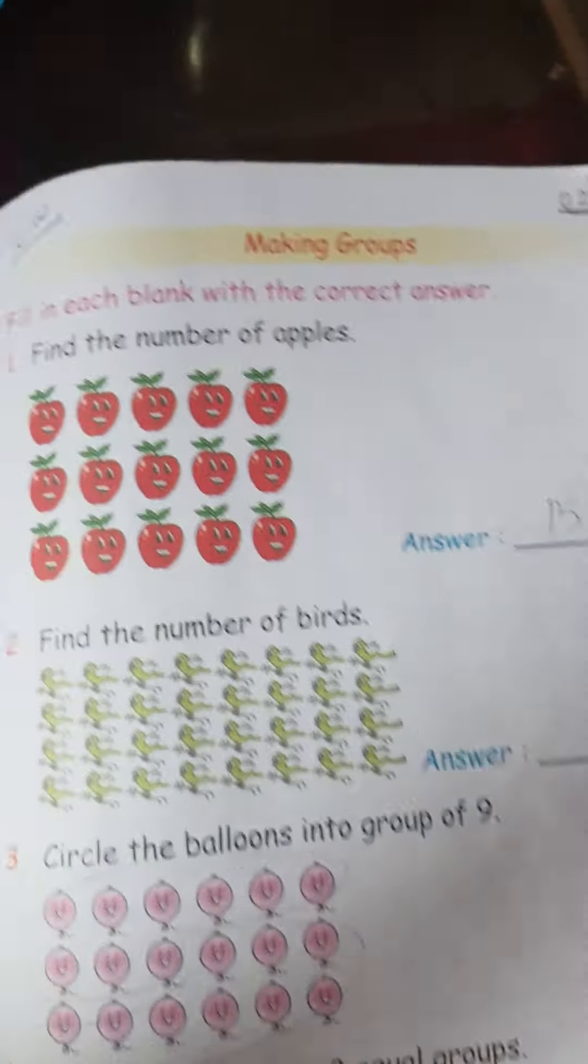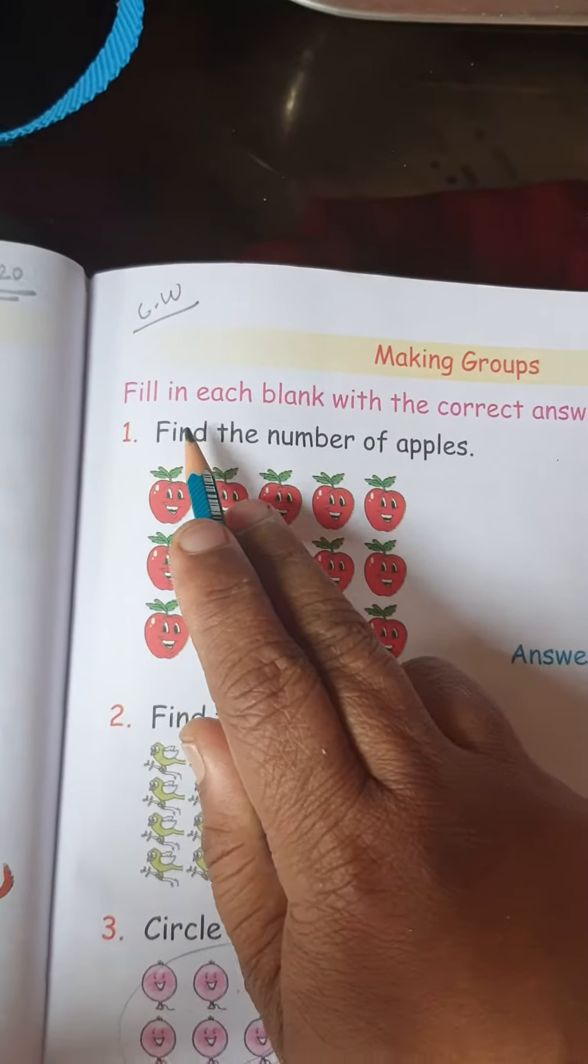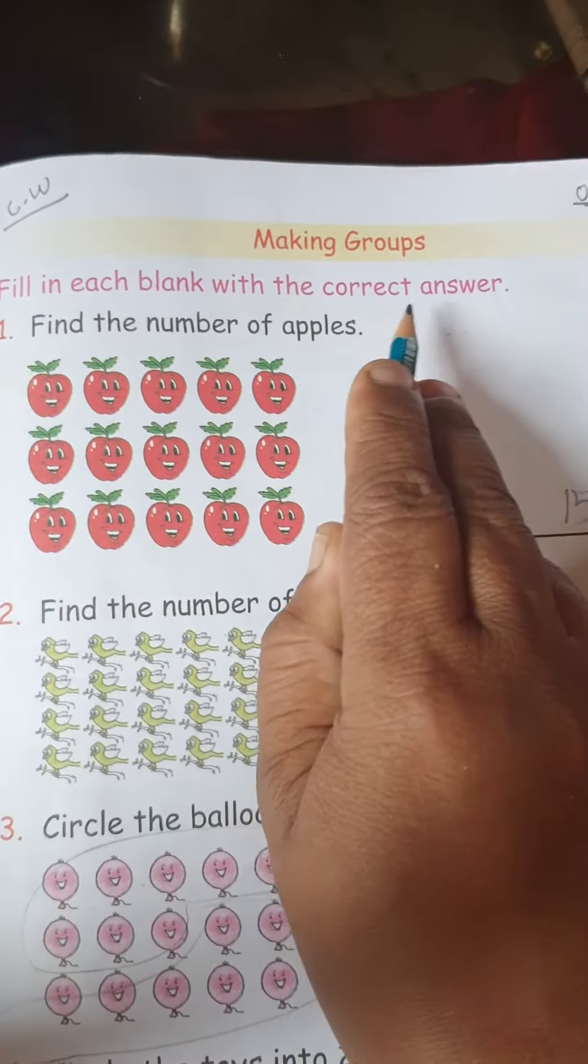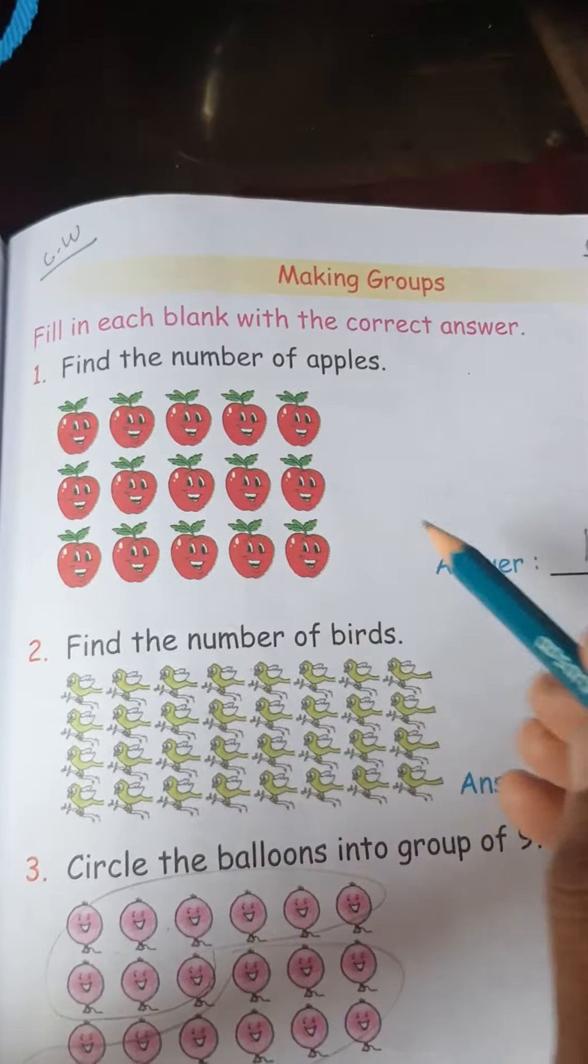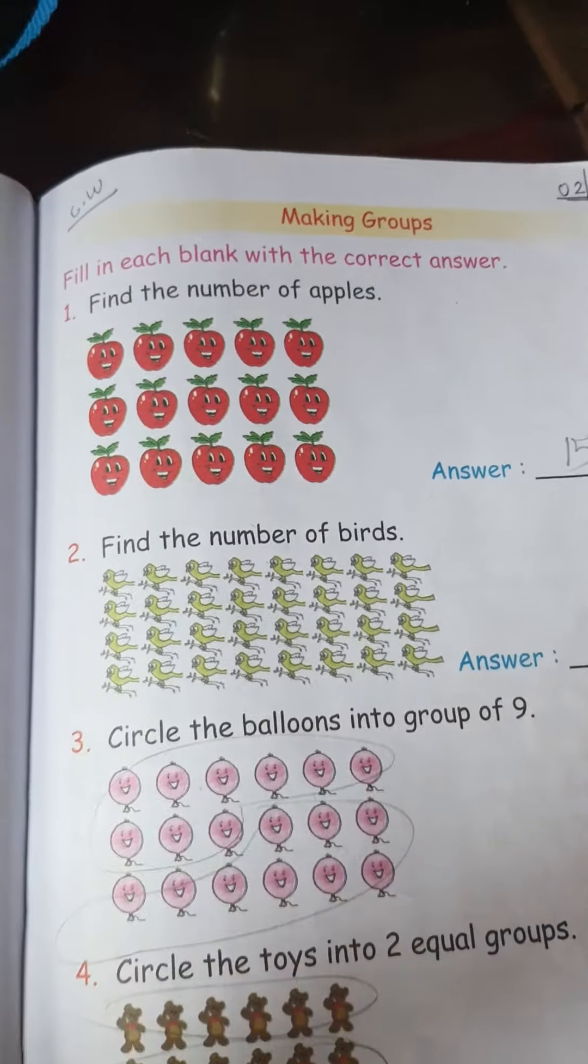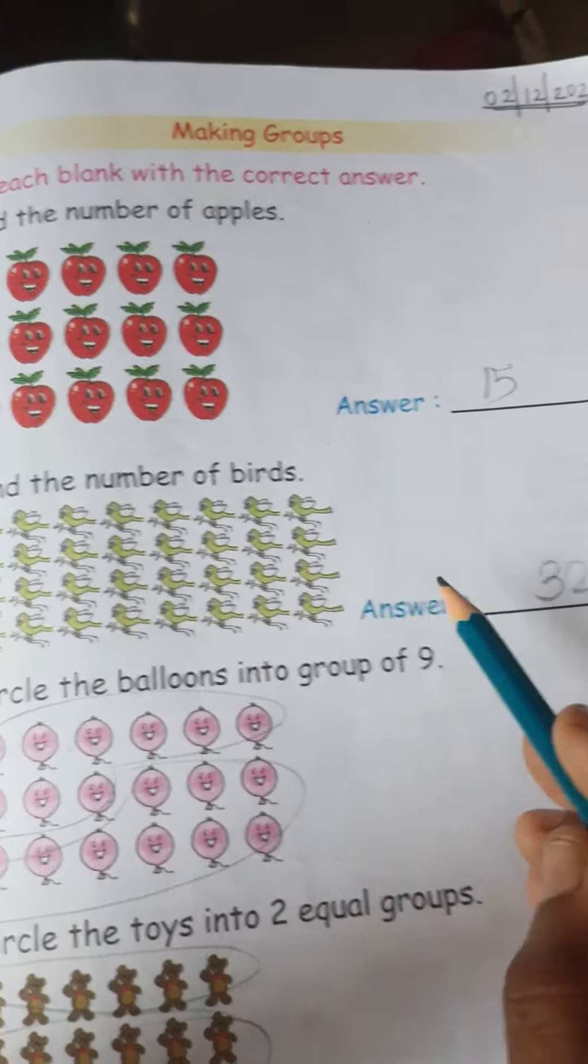Next page. See, making groups. Making groups means, what is here? Fill in each blank with the correct answer. Means find the number of apples, you have to count first, then write here how many apples. Then find the numbers of birds, count first, then write.